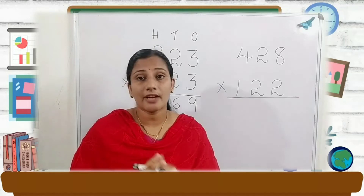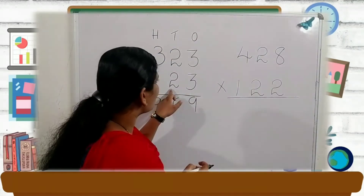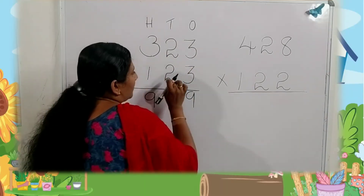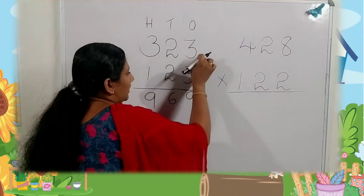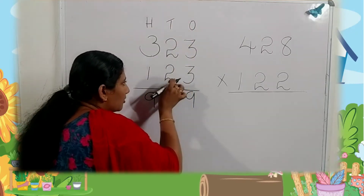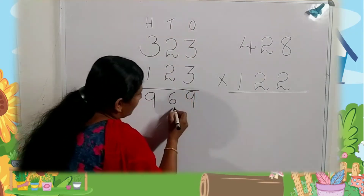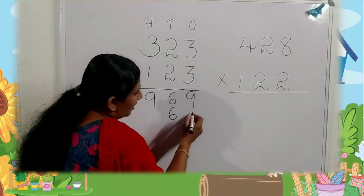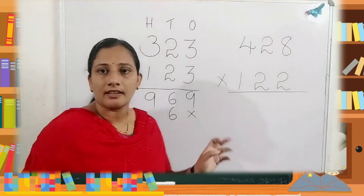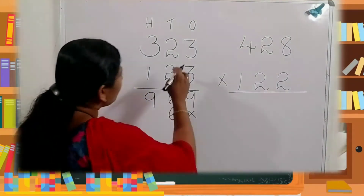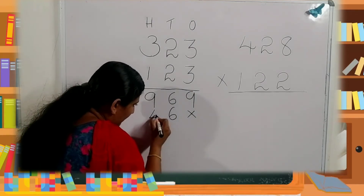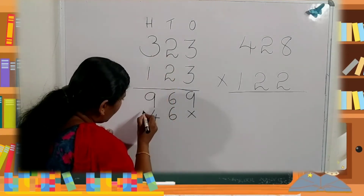Next, which number do we take for multiplying? That is two. Multiply these three digits by two. First, two into three — two threes are six. Where do we write it? That is the tens place, so here. There are no numbers before it, so just give a symbol of X for placeholder. Next, two multiplied by two — two twos are four. In this place. Next, three twos are six.